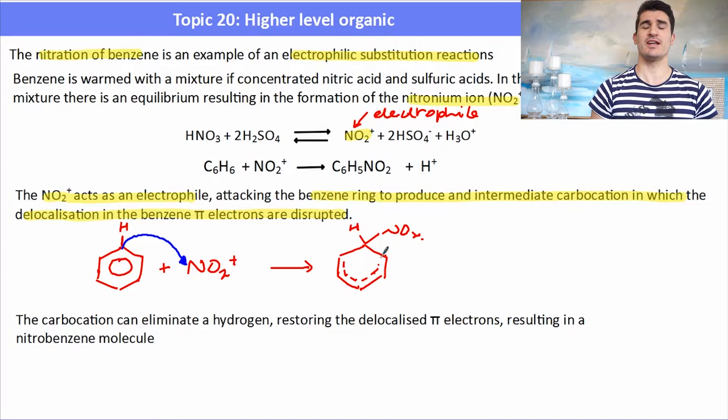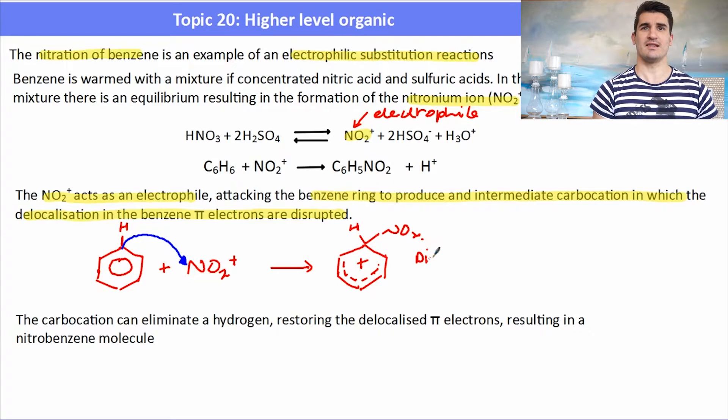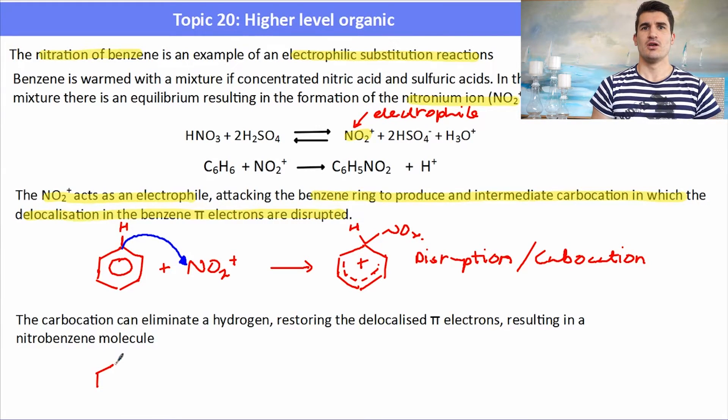It also has a positive charge. What will happen then is that the carbocation will be able to kick off the hydrogen or eliminate the hydrogen, leaving the nitro group attached to the benzene ring. Then it will re-establish its delocalization, so we now have nitrated the benzene ring.